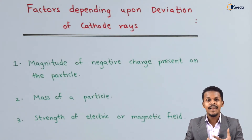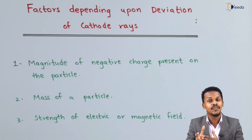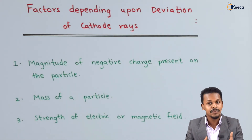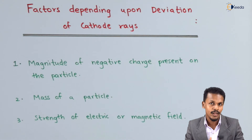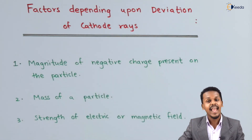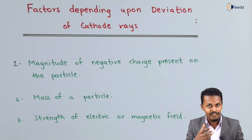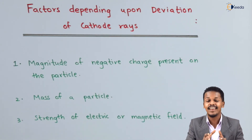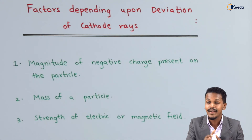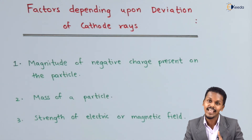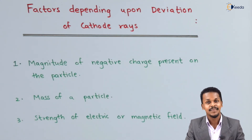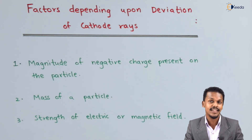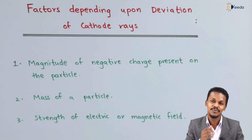If we apply a higher magnetic field or higher electric field, the deviation of the charged particle will also be more. In this case we are considering the cathode rays, which are nothing but negatively charged particles. So all these points are the factors depending upon the deviation of the cathode rays. Thank you friends for watching this video, I hope you understood it clearly, and don't forget to subscribe to the Ikita channel.